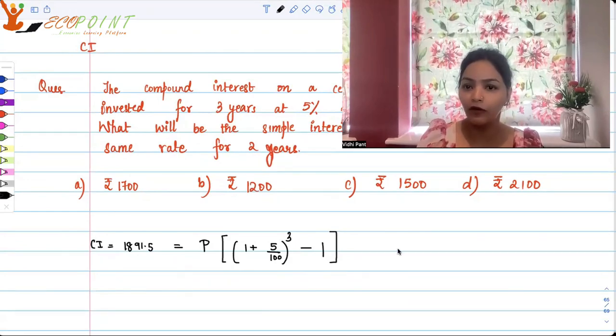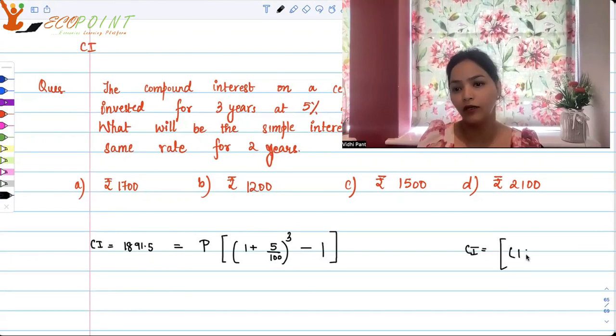So this is what is the formula for compound interest. You need to recall this formula. 1 plus r upon 100 to the power t minus 1.